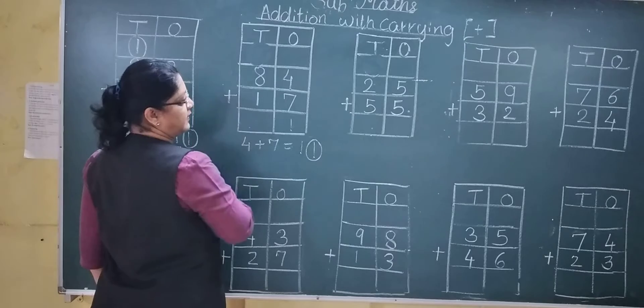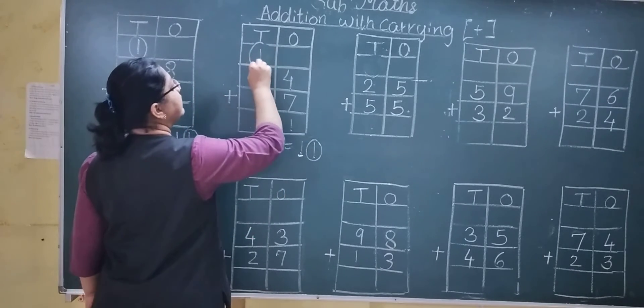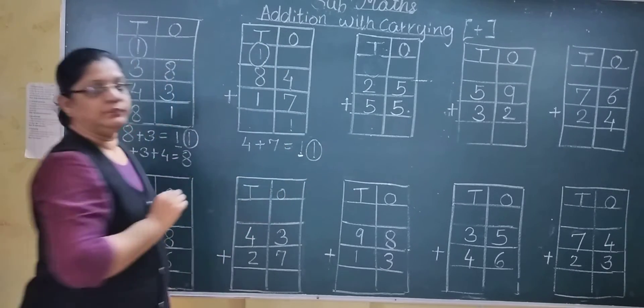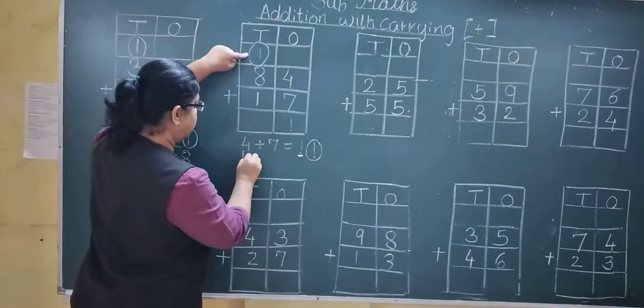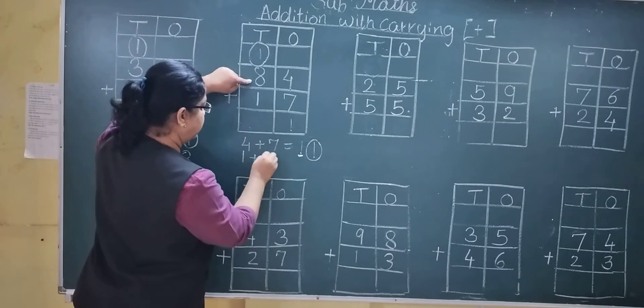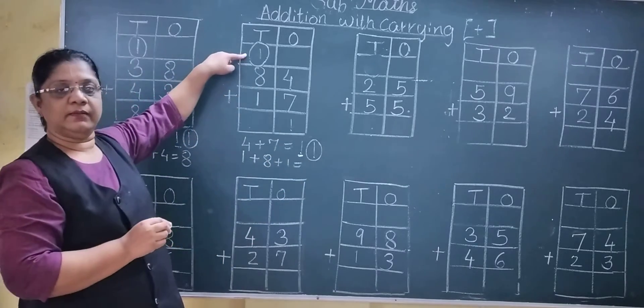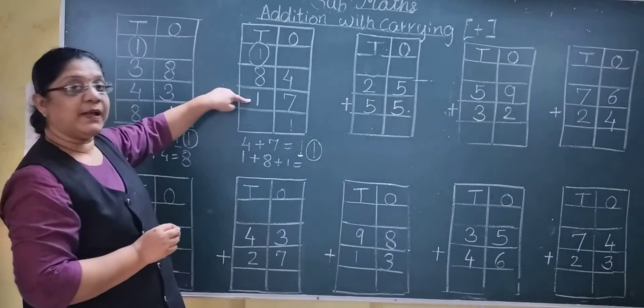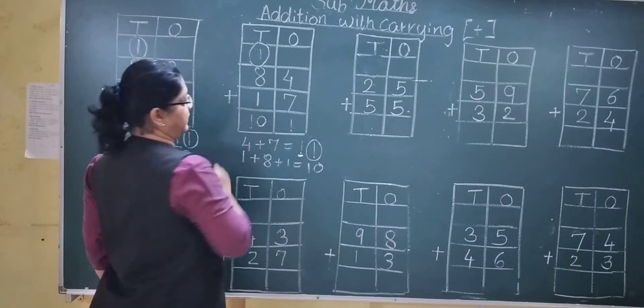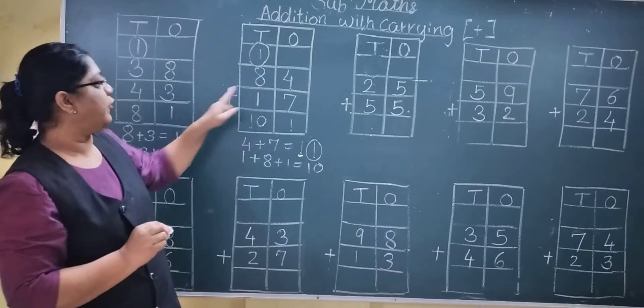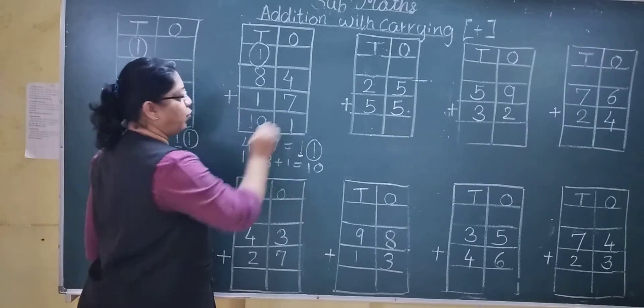This 1 one right here, and this 1 ten, carry over to the tens column. And carry also, 1 plus 8 plus 1. 8 plus 1 is 9, 9 plus 1 is 10. See, 10 we will write as it is here. 84 plus 17 is equal to 101.